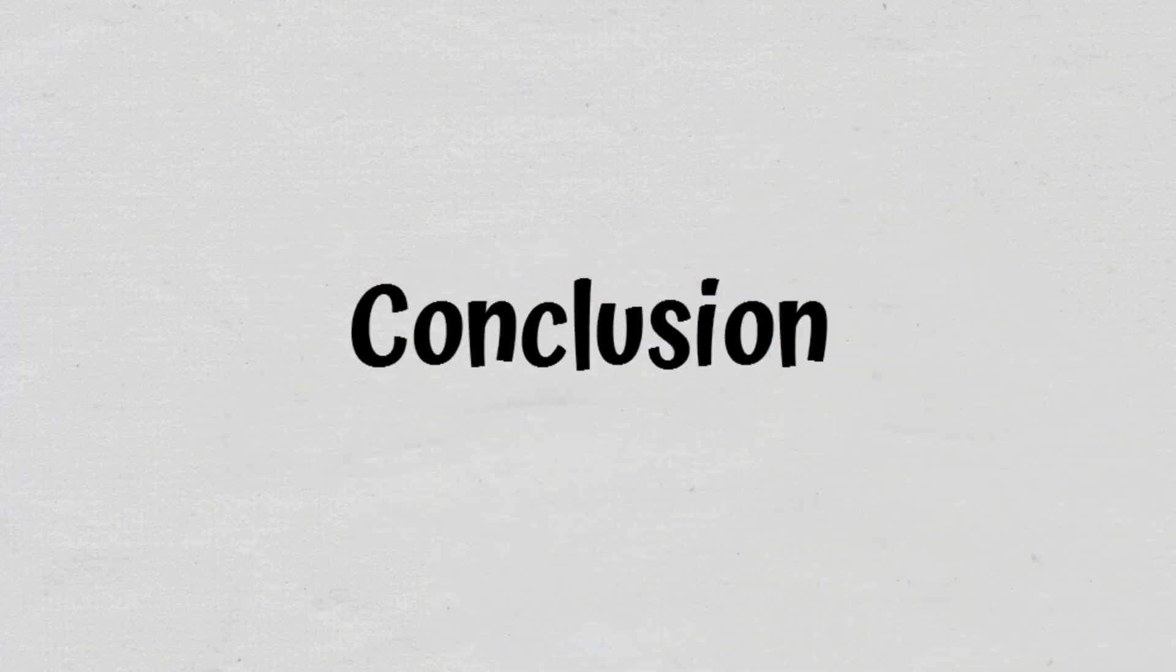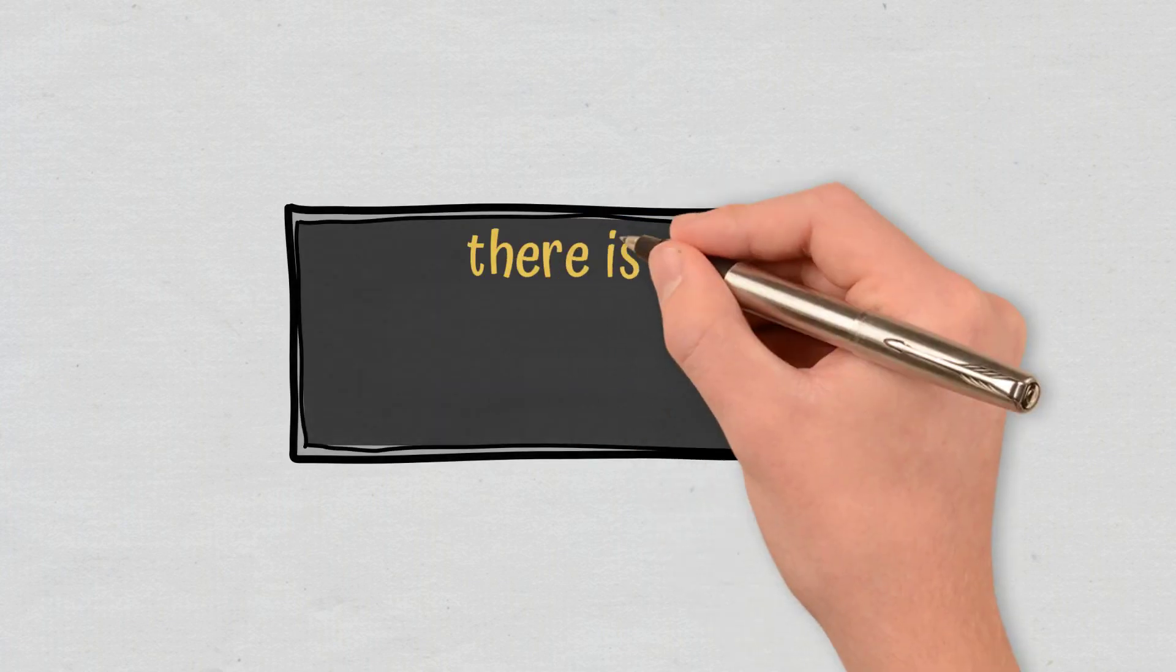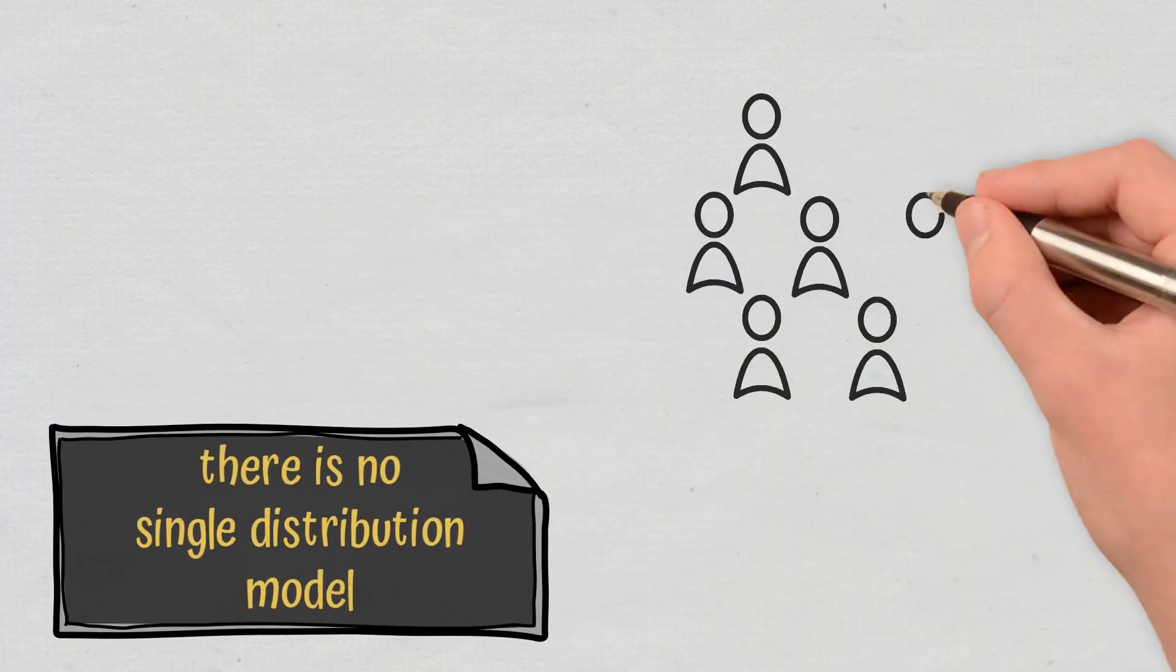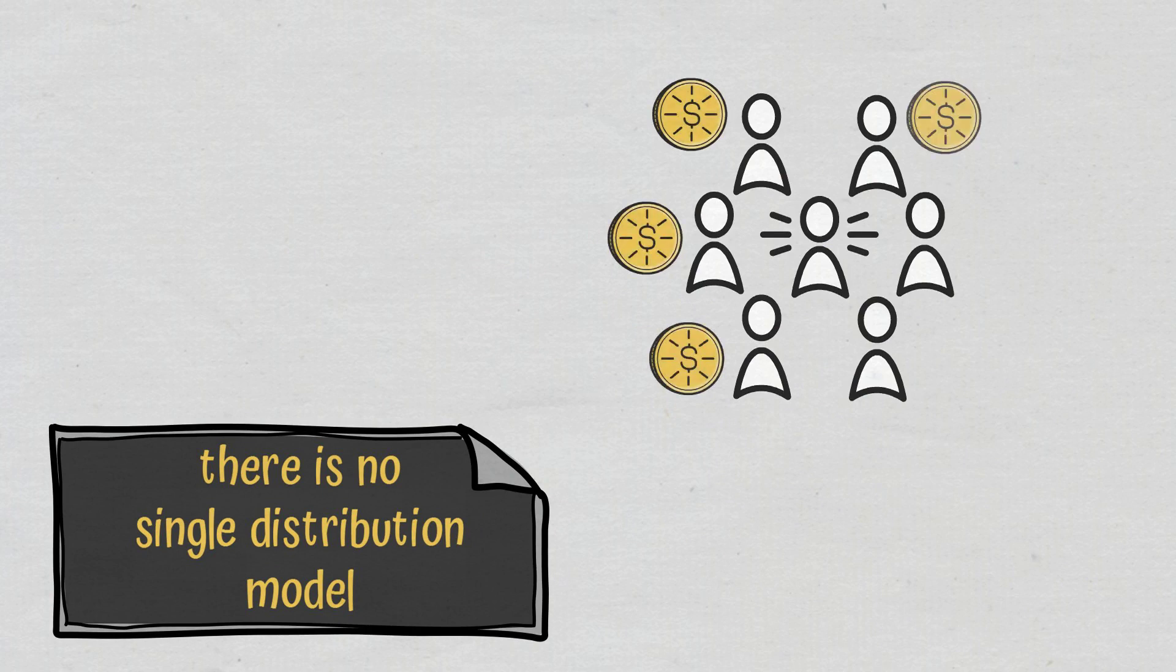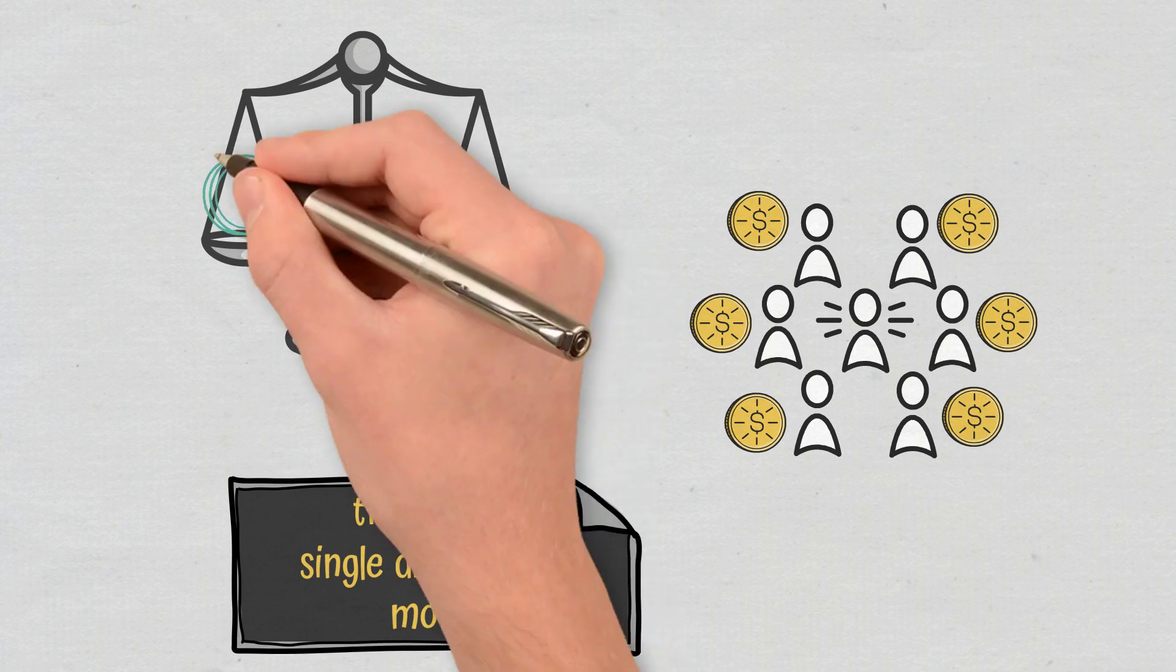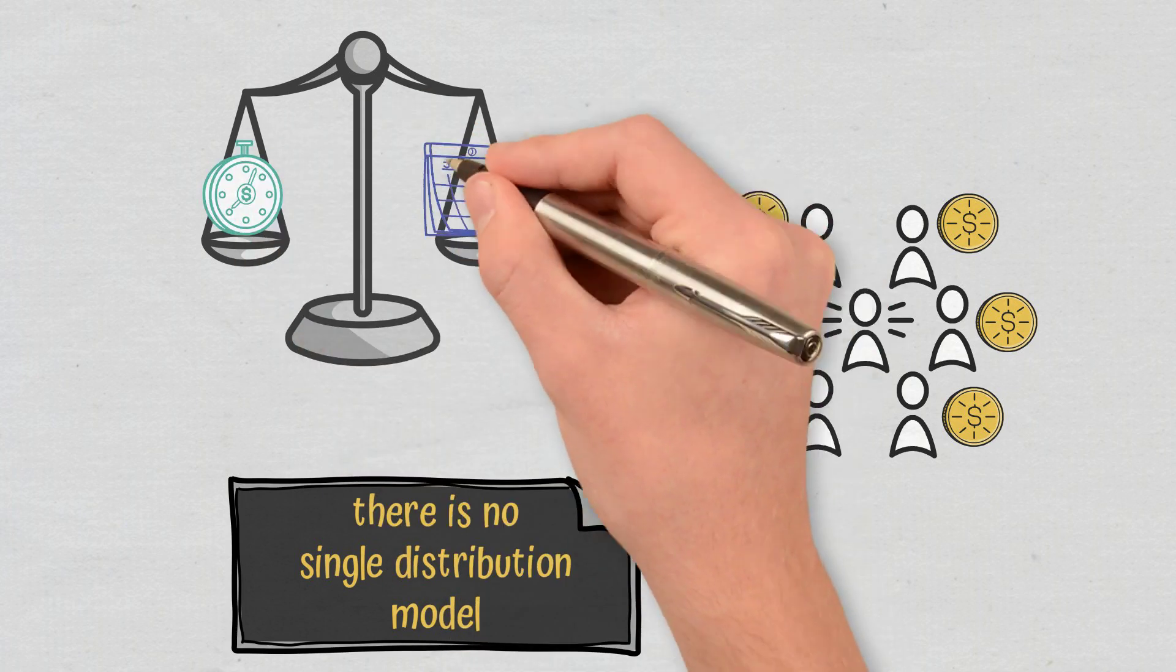Conclusion. To sum up, there is no single distribution model. However, successful token offerings need to ensure a fair distribution and strike a balance between short- and long-term considerations.